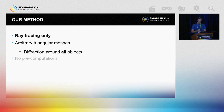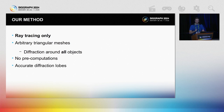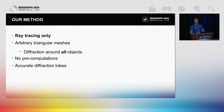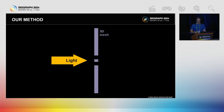A brief overview — our requirements have been as follows: we want to continue to use ray tracing because it's practical, we want to diffract around all objects, all edges, all corners, objects must be represented via typical triangular meshes, and we would like to reproduce the diffraction lobes accurately without any scene-specific pre-computations. So back to this double slit example.